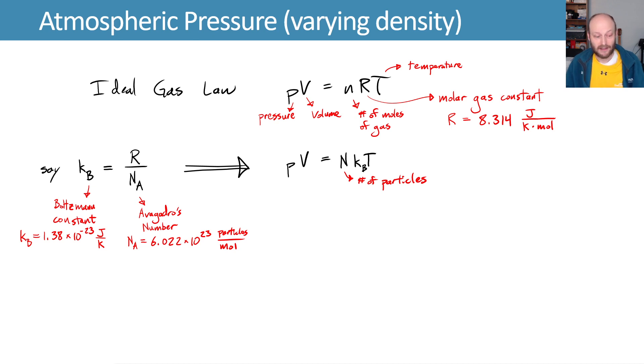That lets us say that for one molecule of air and volume equal to mass over density, we can say that my pressure times mass over density is equal to kᵦT.